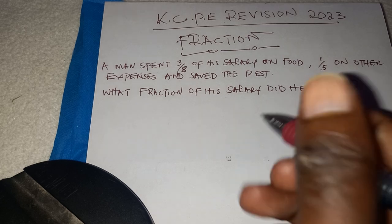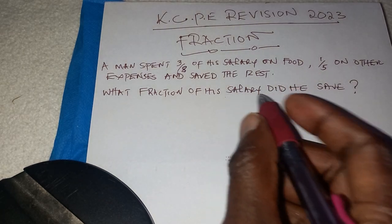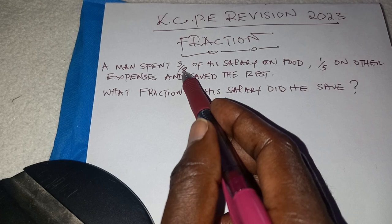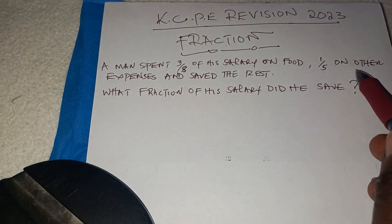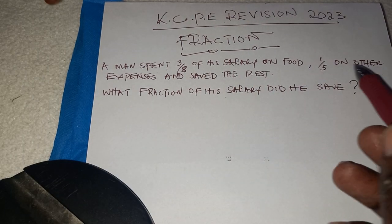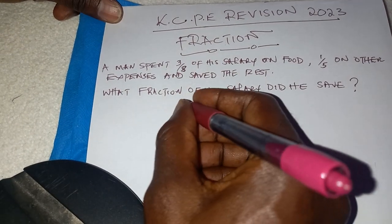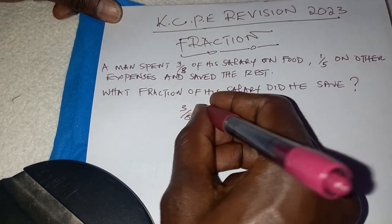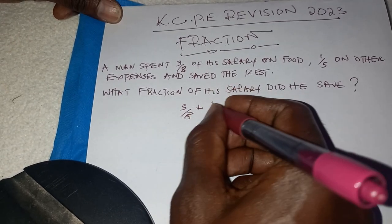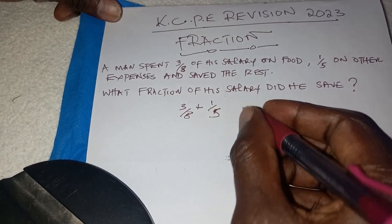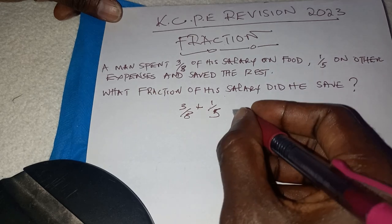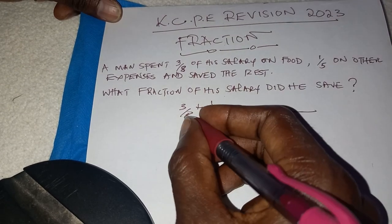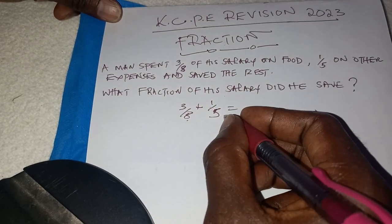First of all, when you are working out this question, start by adding the fraction spent on food and the fraction spent on other expenses. That is, you add 3 over 8 plus 1 over 5. Find the LCM of 8 and 5.